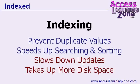So the benefits of indexing: you can prevent duplicate values, and it speeds up searches and sorts. However, it does have some downsides. Indexing will slow down updates because every time you change a value or add a new record, it has to update all those index tables. But generally, with most databases, you're looking up information and generating reports and queries much more often than you add or edit new records.